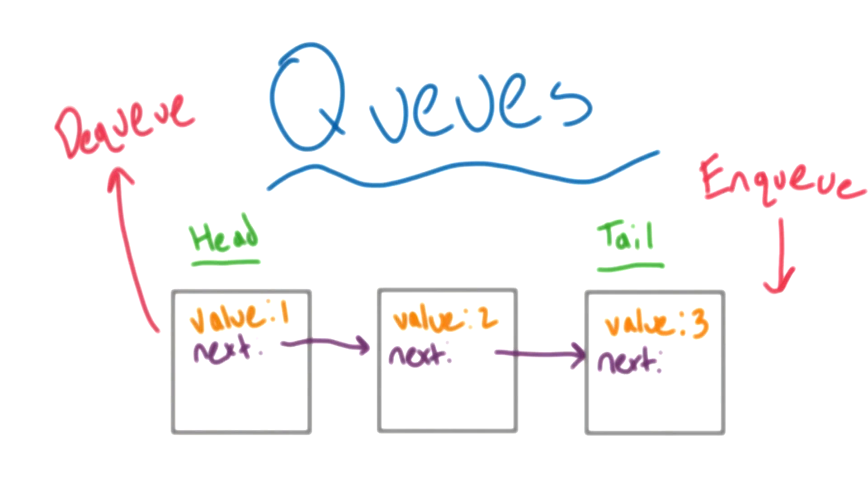Again, you can implement this data structure with a linked list, where you also save references to the head and tail, so you can look them both up in constant time.